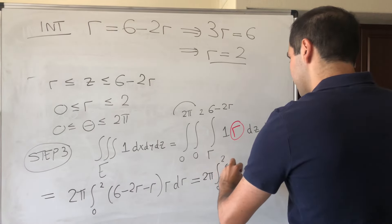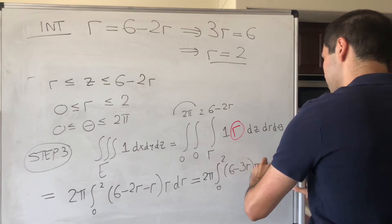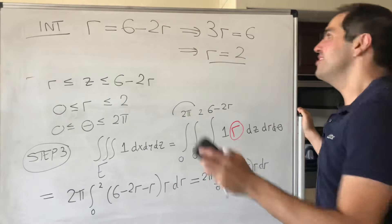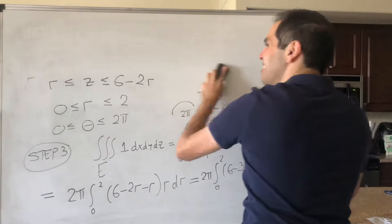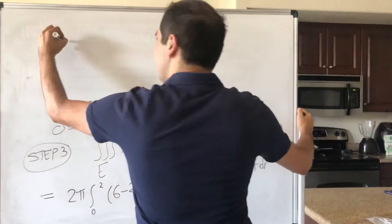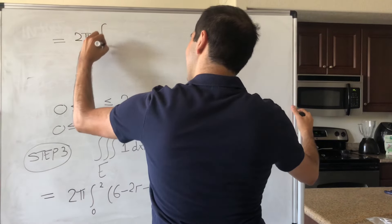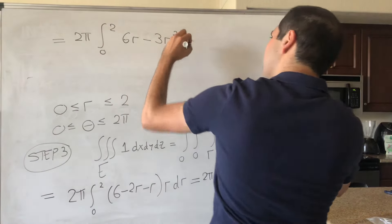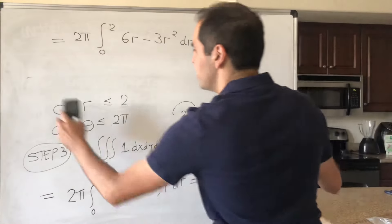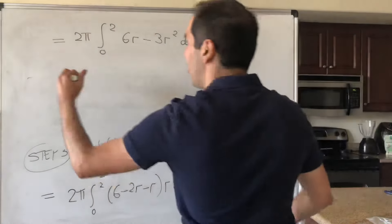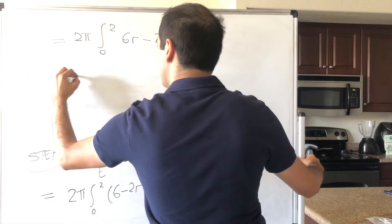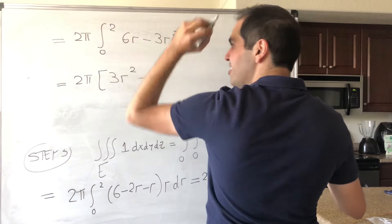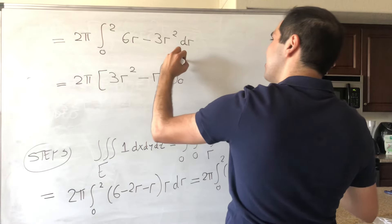So, this becomes 2 pi times integral from 0 to 2, again, 6 minus 3r times r dr. And, let's find an antiderivative. This becomes 2 pi times integral from 0 to 2 of 6r minus 3r squared dr. And, let's find an antiderivative. So, an antiderivative of 6r, if I'm not mistaken, that is 3r squared. An antiderivative of 3r squared is r cubed. How nice is that? So, from 0 to 2.